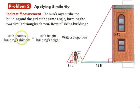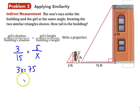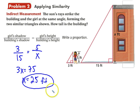So the girl's shadow over the building's shadow—3 over 15—equals the girl's height over the building's height, which is 5 over X. So 3X equals 75, and X equals 25 feet. That's how tall the building is. So without even measuring, we already know based on the concept of proportions.